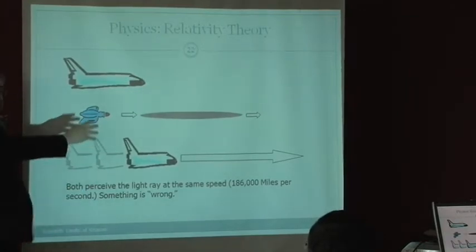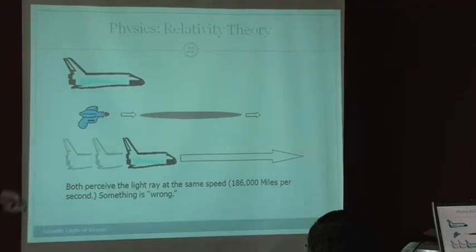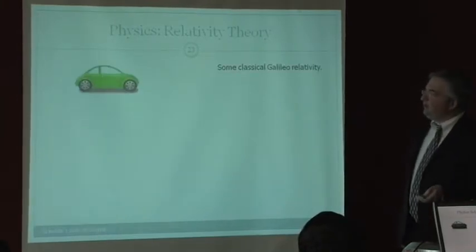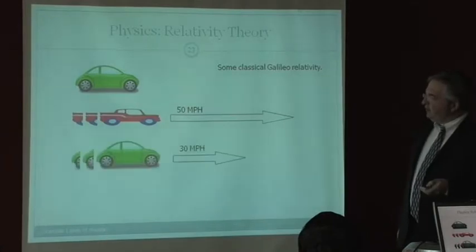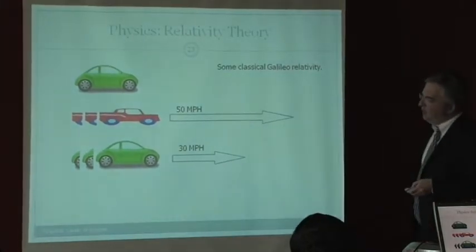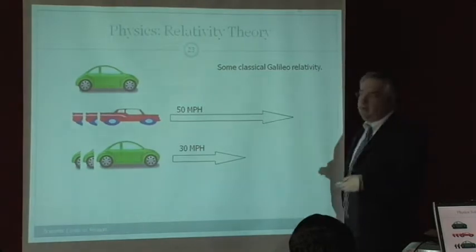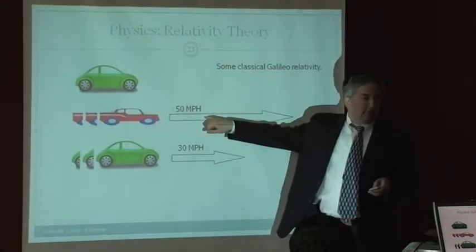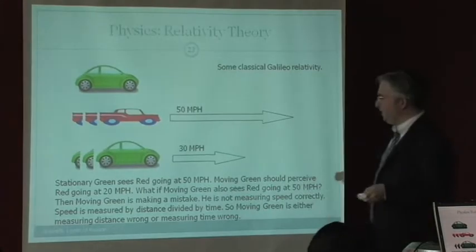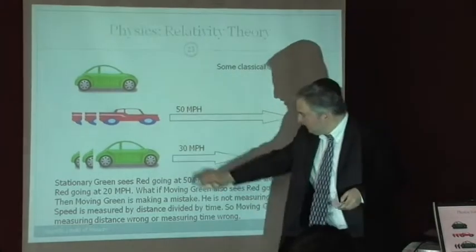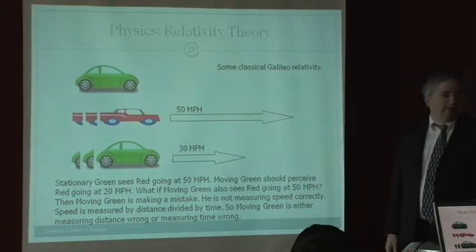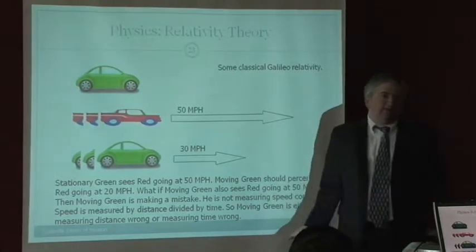Let's go to the real world for a second. Here's some classical stuff. You have a green car, you have a red car, and you have a green car. The green car is standing still, and he perceives the red car as going 50 miles an hour. This green car is moving at 30 miles an hour. What should he perceive this as going? 20 miles an hour. Perfect. So stationary green sees red going at 50 miles an hour. Moving green should perceive red going at 20 miles an hour. What if moving green also sees red going at 50 miles an hour?